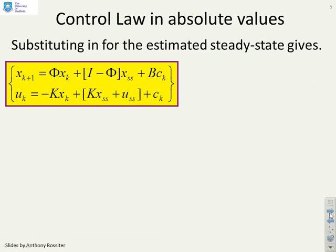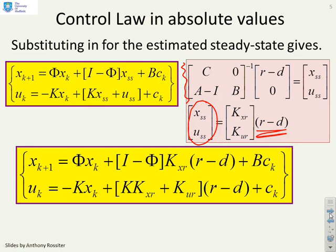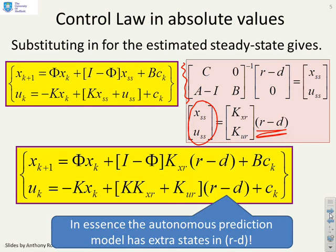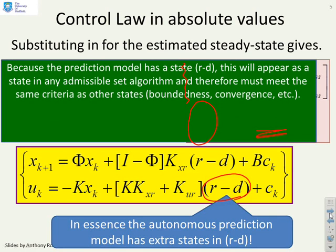Looking at the predictions covered in the previous video, we have the dependence of the steady state on r minus d. Putting these together yields a prediction model that includes r minus d as a variable. The key change is to make r minus d an additional state in the autonomous prediction model and therefore treat it as a state in the admissible set algorithm.